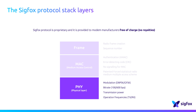Operation frequencies are also managed by this layer. For example, around 900 MHz in FCC-like regions and 868 MHz in the European countries.